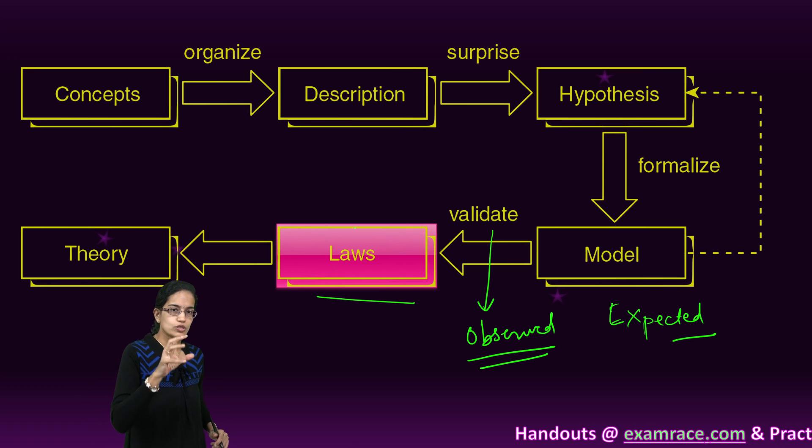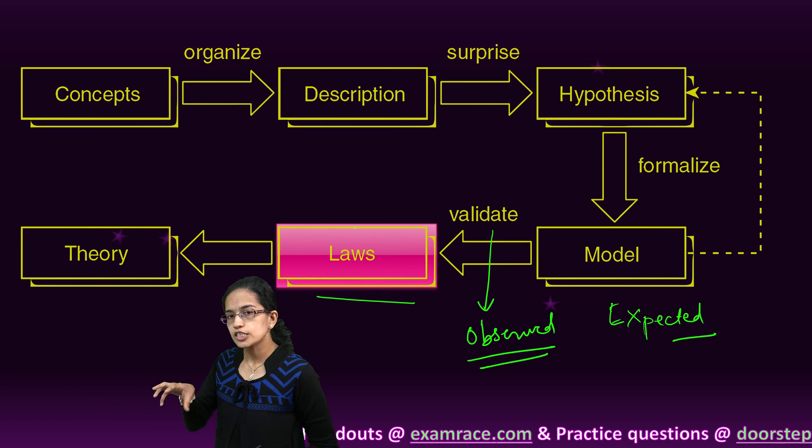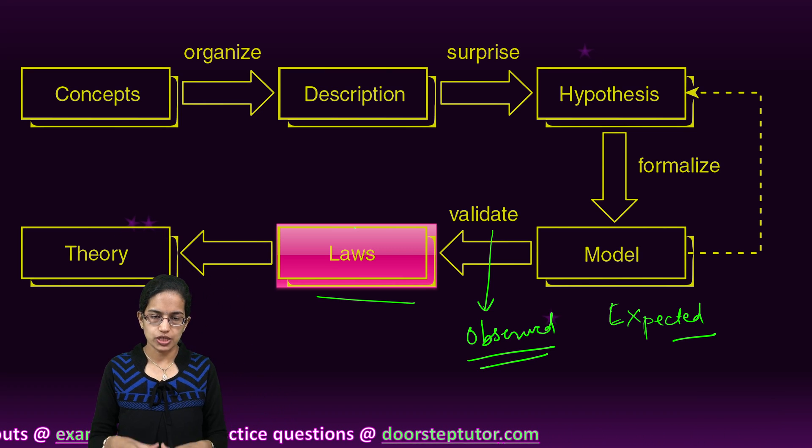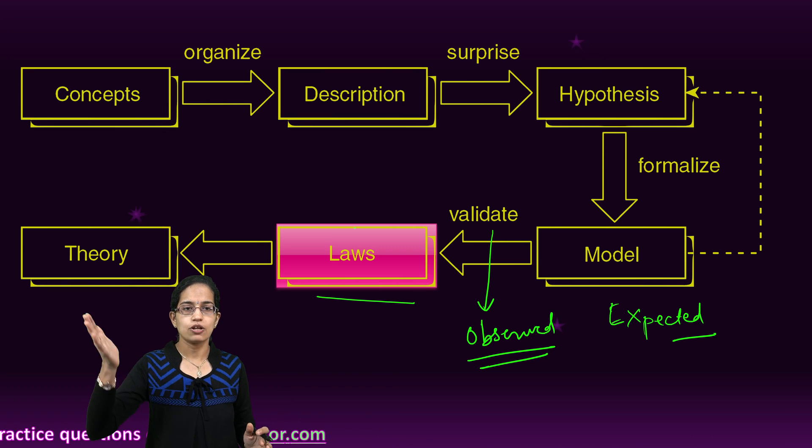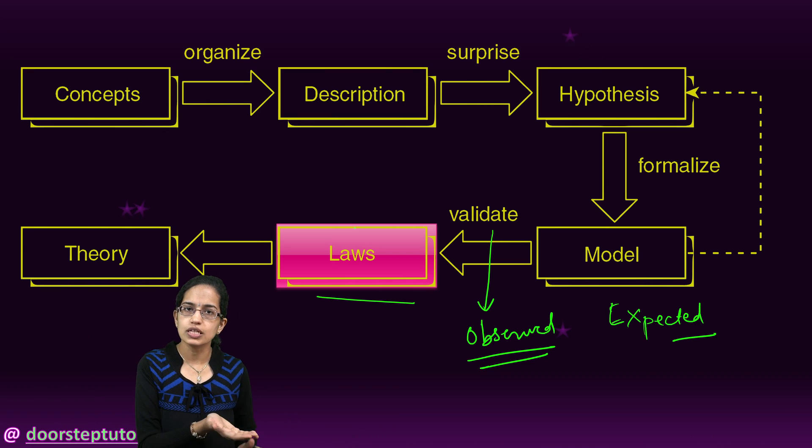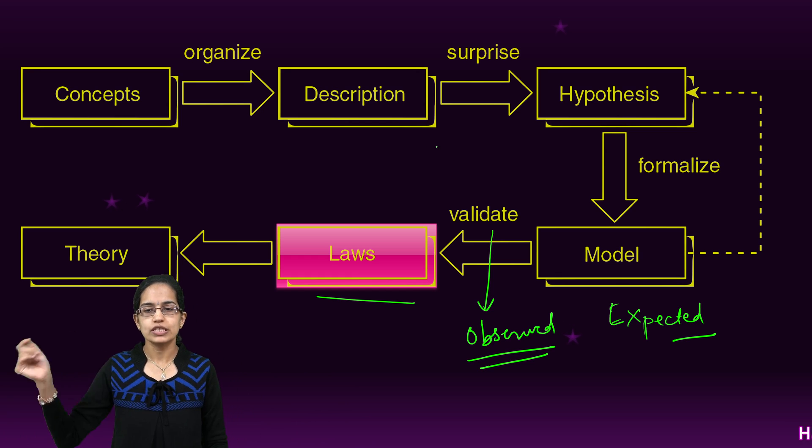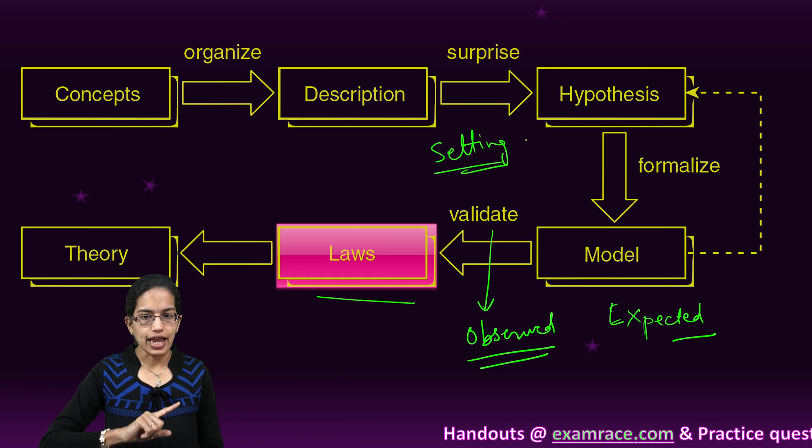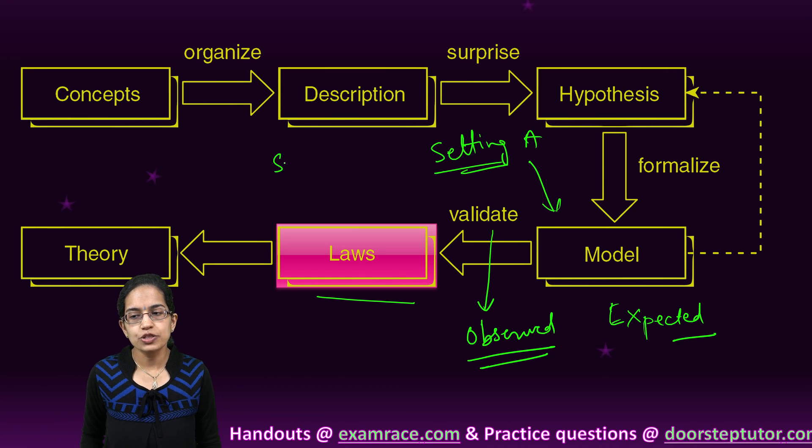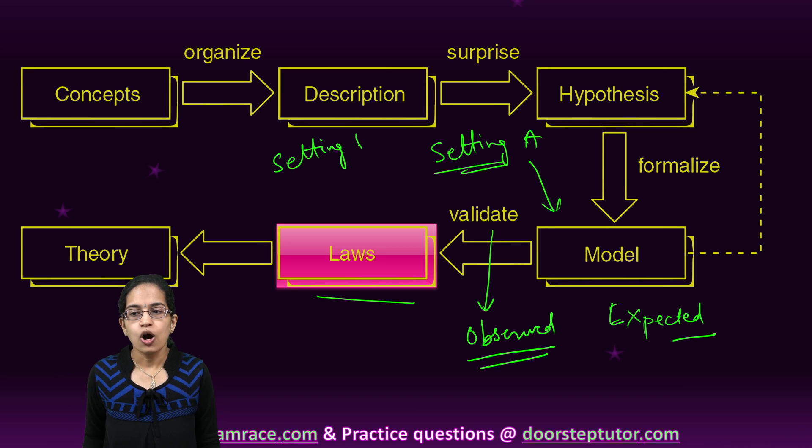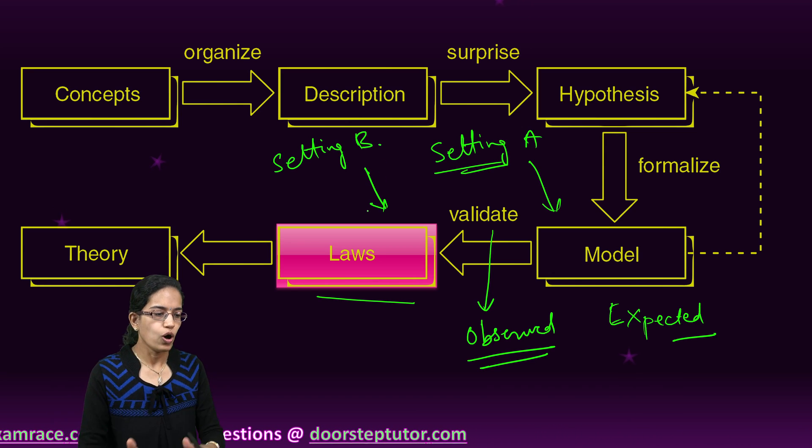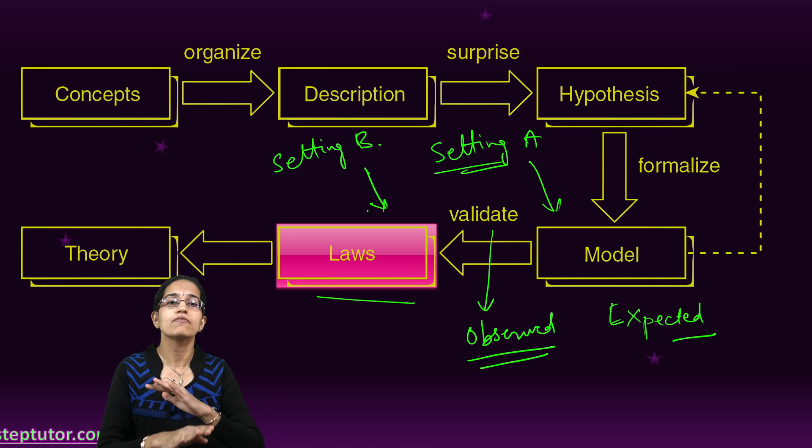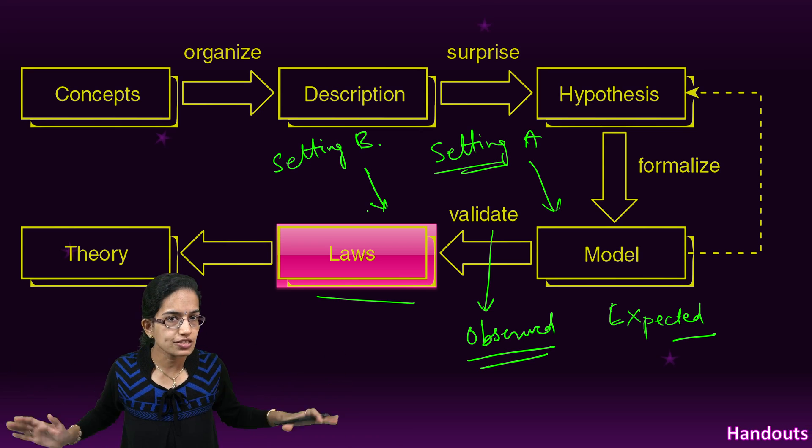What are laws? Laws simply mean that a scenario or situation which is applicable at one given location—let's say my model which I created of declining cancer cases with the distance from the power plant is true for setting A as per my model, but it would be true for setting B or region B as well as per the law. Under laws, we are trying to create a universal statement with unrestricted range. My range is not limited.